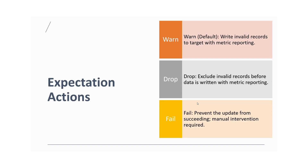When the record condition is not met, the first action is to write invalid records to the target with metric reporting — so even though the condition is failing, records still write to the target system but also write to the metric reporting. The second action, drop, excludes invalid records before data is written, with metric reporting. The third action, fail, prevents the pipeline from succeeding entirely, stopping the pipeline — you must find the issue and restart the pipeline to process the data.